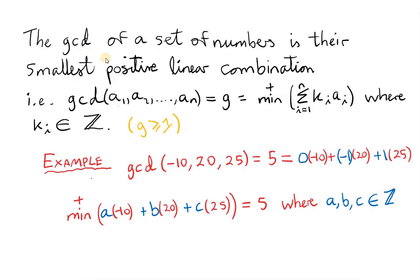The main step in proving this theorem is to prove this statement: the GCD of a set of numbers is their smallest positive linear combination. That is, if we take the GCD of the set of numbers a1 to an and call it g, then g must be the minimum positive linear combination of all the a's, where the coefficients ki must be integers. For example, the GCD of minus 10, 20, and 25 equals 5, and we can write 5 as a linear combination of minus 10, 20, and 25, where the coefficients k1, k2, and k3 are integers.